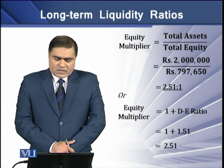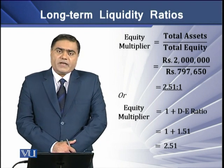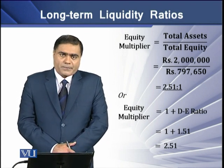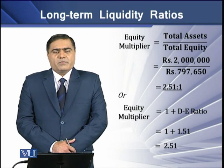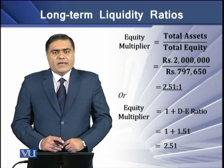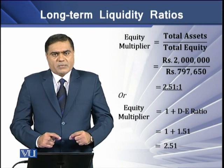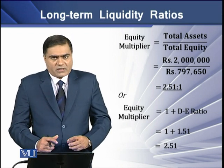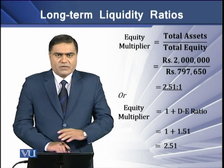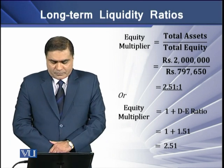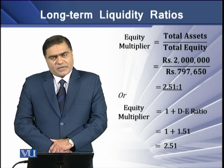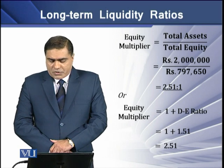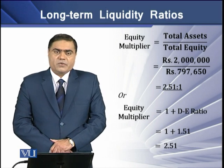A similar version of the debt-equity ratio is the equity multiplier. This tells us how much multiple of equity has been invested in total assets of the firm. The two variables of this ratio are total assets and total equity.